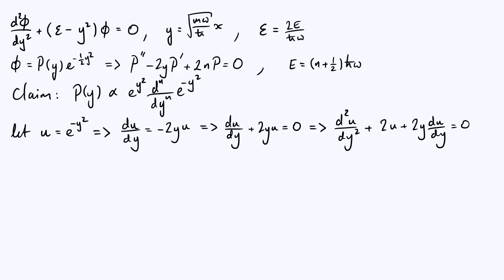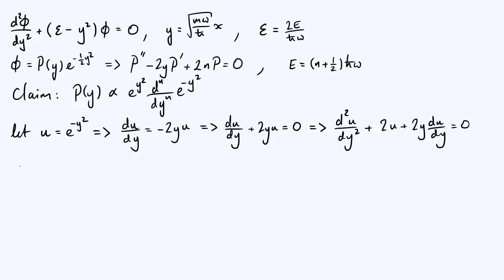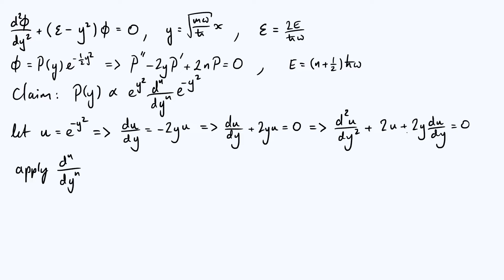Now let's build it up one step further and find the second order differential equation obeyed by the nth derivative of e to the minus y squared. The way to do that is to take the differential equation we've just derived and differentiate it n times, applying the operator d^n by dy^n. The first two terms are fairly straightforward — differentiating those just increases the order of the derivative — but for the third term, 2y du by dy, we need to use Leibniz's theorem to handle the nth derivative of a product.